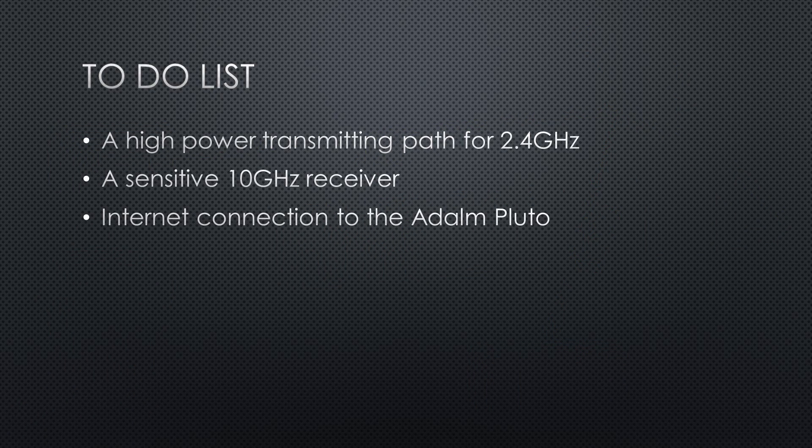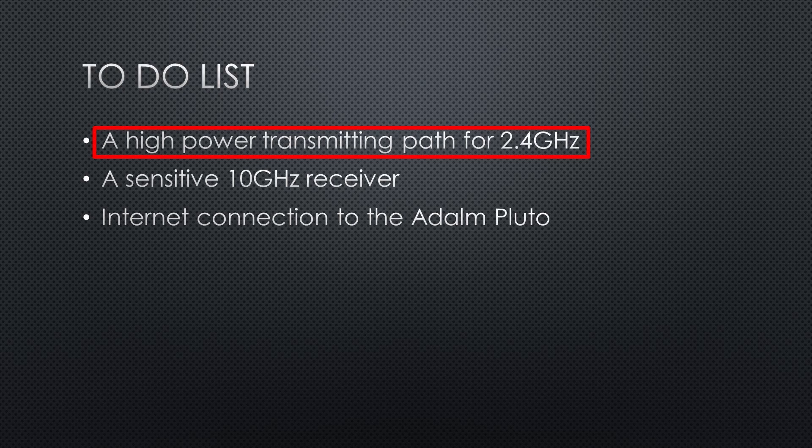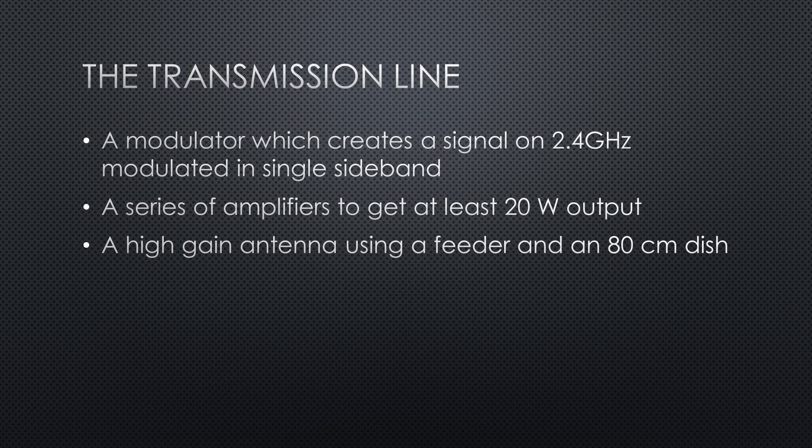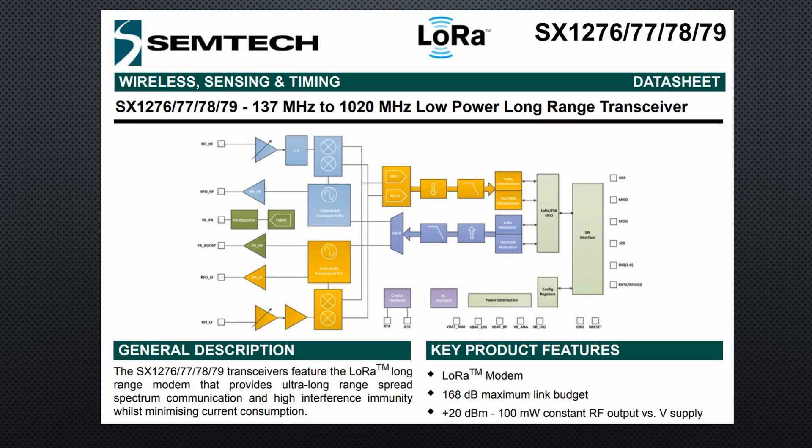Last time we got an overview of the needed components. Today we will build and test the first part: a 2.4 GHz transmitter with an output of 20W or 43 dBm. This is quite a lot if we compare it with the 100mW maximal power of a LoRa transceiver.